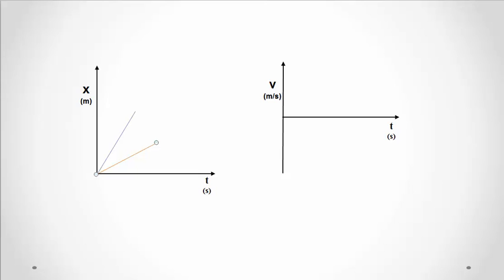So I've got a blue and an orange object. What can we tell just by looking at this graph? Well, without numbers or tick marks I don't know exactly how fast they're going, but I know they're both moving in the positive direction because they both have positive slopes, and the magnitude of the slope tells me their speed. The blue object's slope is larger, so I know it's traveling faster than the orange.